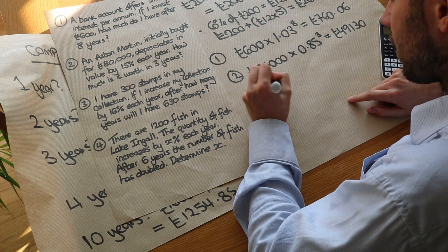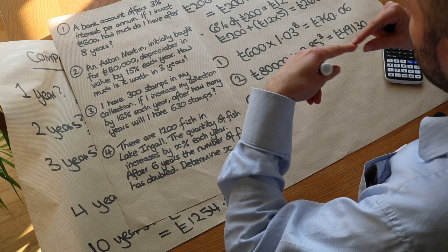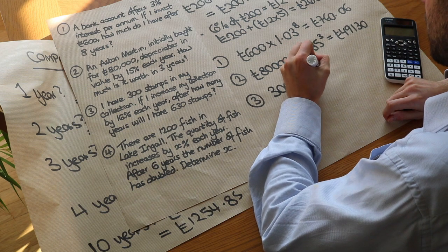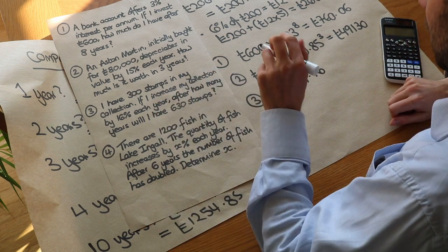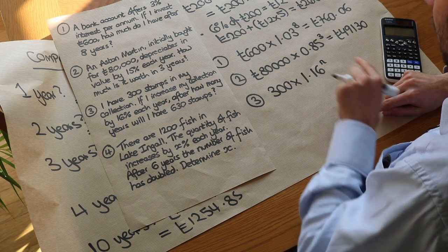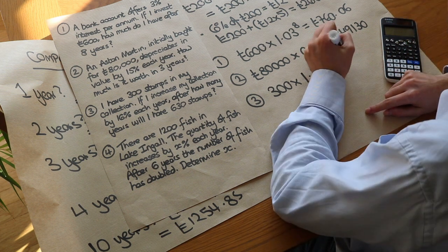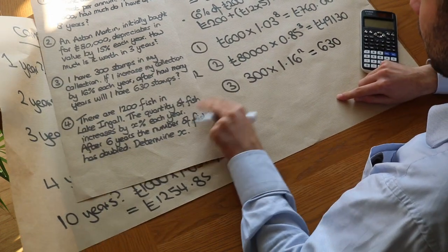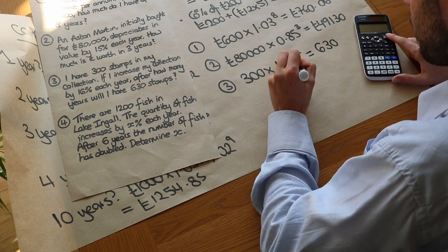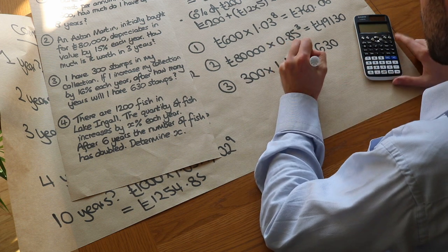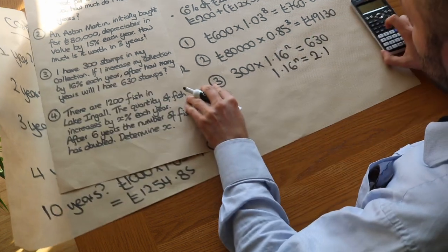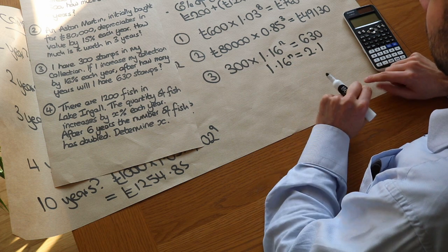So we write: three hundred times 1.16 to the power n equals six hundred and thirty, where n is the unknown number of years. Dividing both sides by three hundred, we get 1.16 to the power n equals 630 ÷ 300, which is 2.1. So we need to find what power of 1.16 gives 2.1.